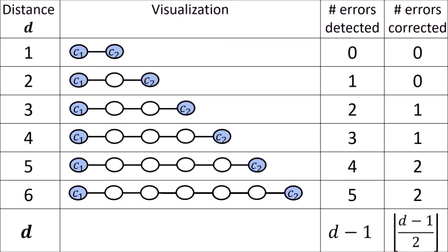We also learned about the minimum distance D, which is directly related to the number of error bits we can correct in a codeword. For linear codes, we can easily get the minimum distance D by finding the non-zero codeword with the smallest Hamming weight in the set of valid codewords.